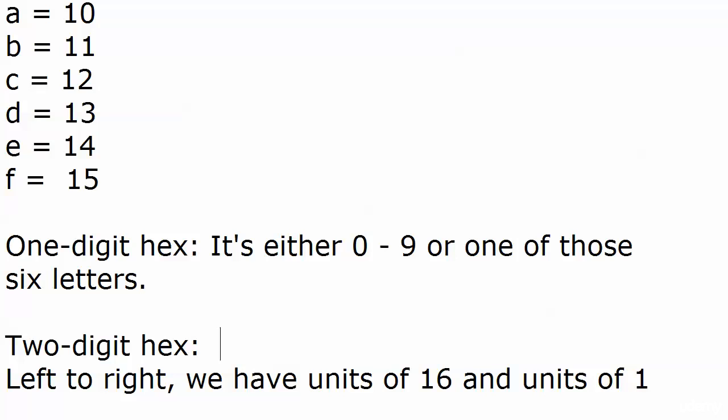Now when it comes to one-digit hex, if you're converting that to decimal, you know that's either going to be zero through nine or one of these six letters. A equals 10, B equals 11, C equals 12, D equals 13, E equals 14, F equals 15.